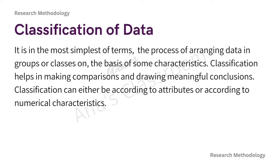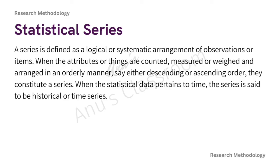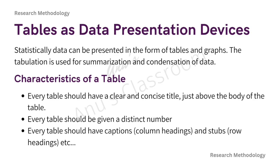When individual observations possess numerical characteristics, they are classified on the basis of class intervals, each having an upper limit and a lower limit known as class limits. The difference between these two limits is called the magnitude of class or the class interval. A statistical series is a logical or systematic arrangement of observations arranged in an orderly manner — ascending or descending — such as age or height. When data pertains to time, it is called time series or historical data, like bank account transactions ordered by date.